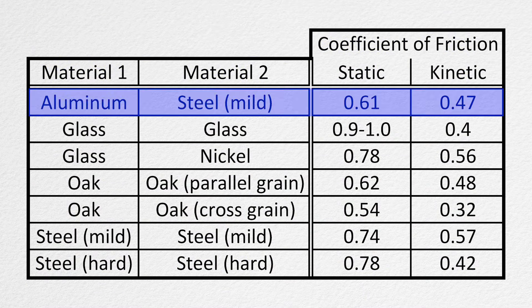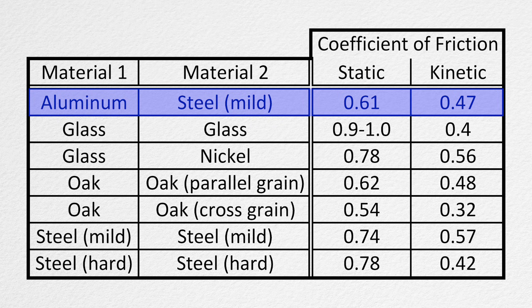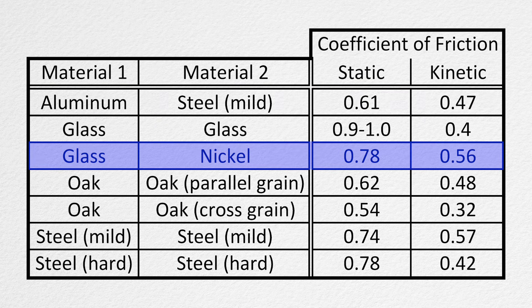You can see if aluminum is in contact with mild steel, the coefficient of static friction is 0.61 and the coefficient of kinetic friction is 0.47. If glass is in contact with nickel, the coefficient of static friction is 0.78 and the coefficient of kinetic friction is 0.56.